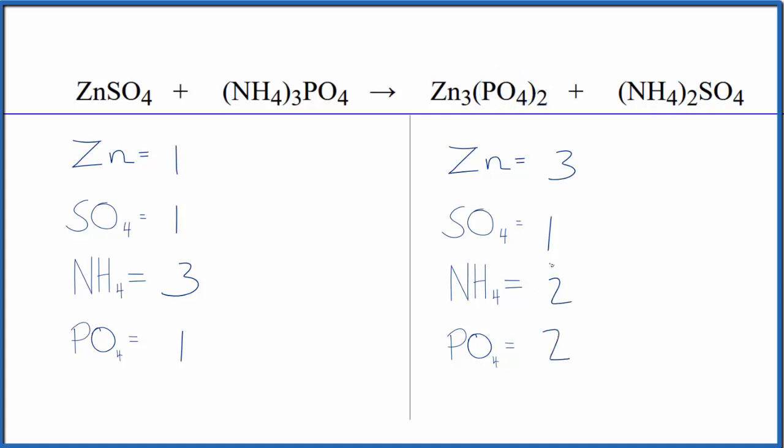Let's balance it. If we put a three in front of the zinc sulfate, one times three would give us three. That balances the zincs. And then we have one times three, so we have three sulfates. Let's just put a three in front of the ammonium sulfate. We have one sulfate times three, so those are balanced.